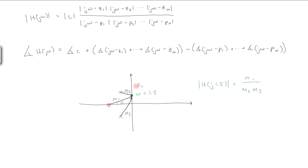And the angle here will be phi 3. And therefore, the angle of h of j 1.5, the phase, is going to be phi 1 minus phi 2 plus phi 3.